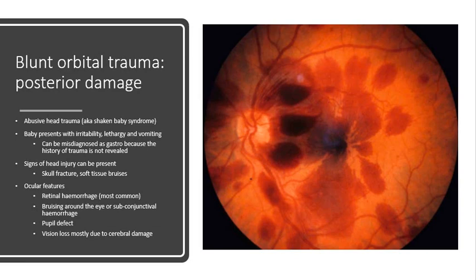It's caused by violently shaking or hitting the baby in the head. If these characteristic ophthalmic features are identified, then the patient needs to be referred to a specialist pediatrician for follow-up and diagnosis, because it becomes quite a serious matter and possibly a criminal investigation. The baby presents with irritability — they're lethargic, tired, and vomiting. The problem is it can be misdiagnosed as something like gastro, because the person accompanying the child may not reveal the history of the trauma.